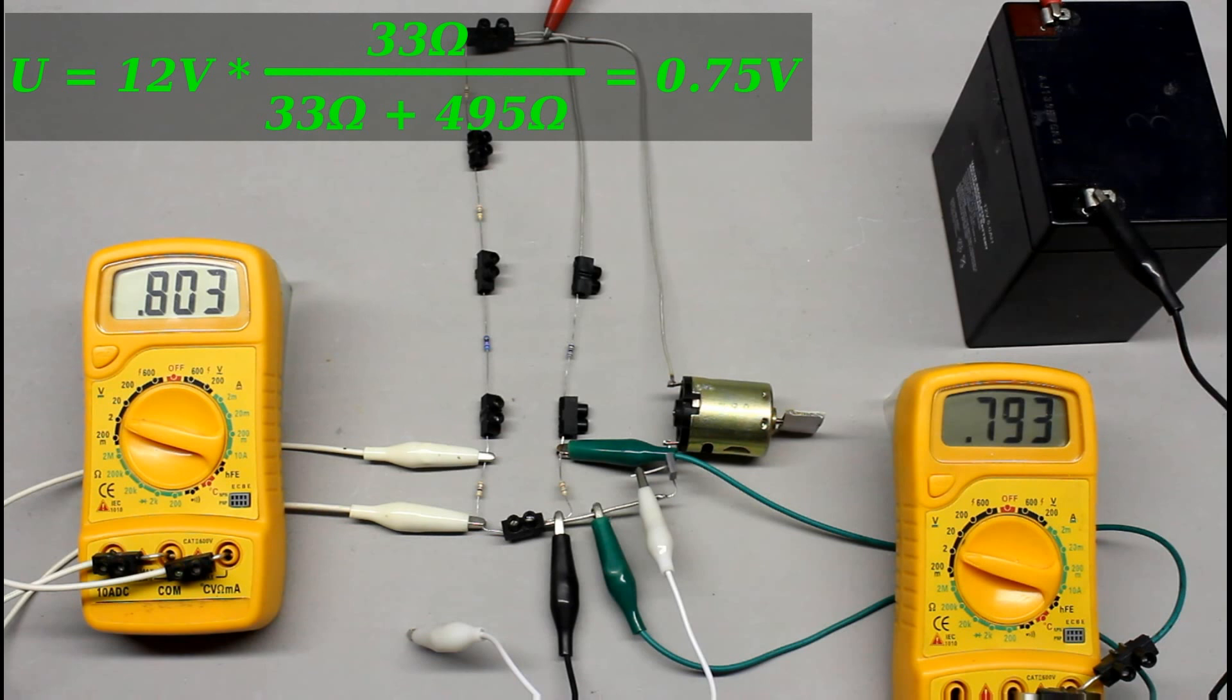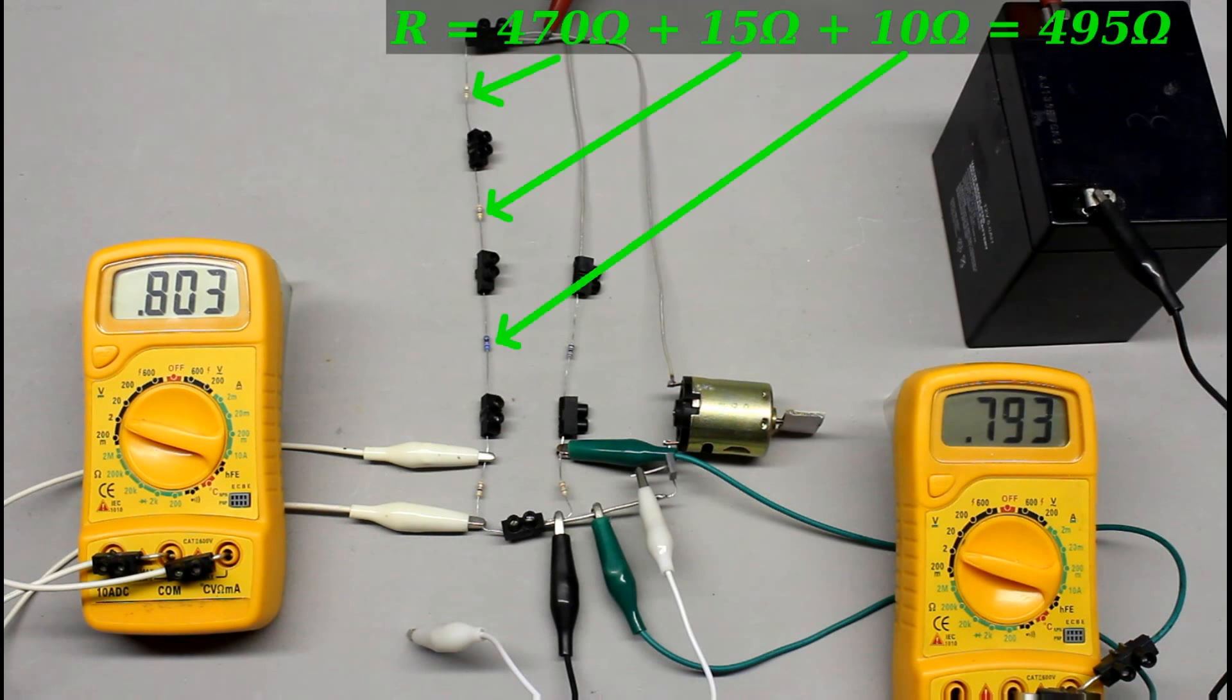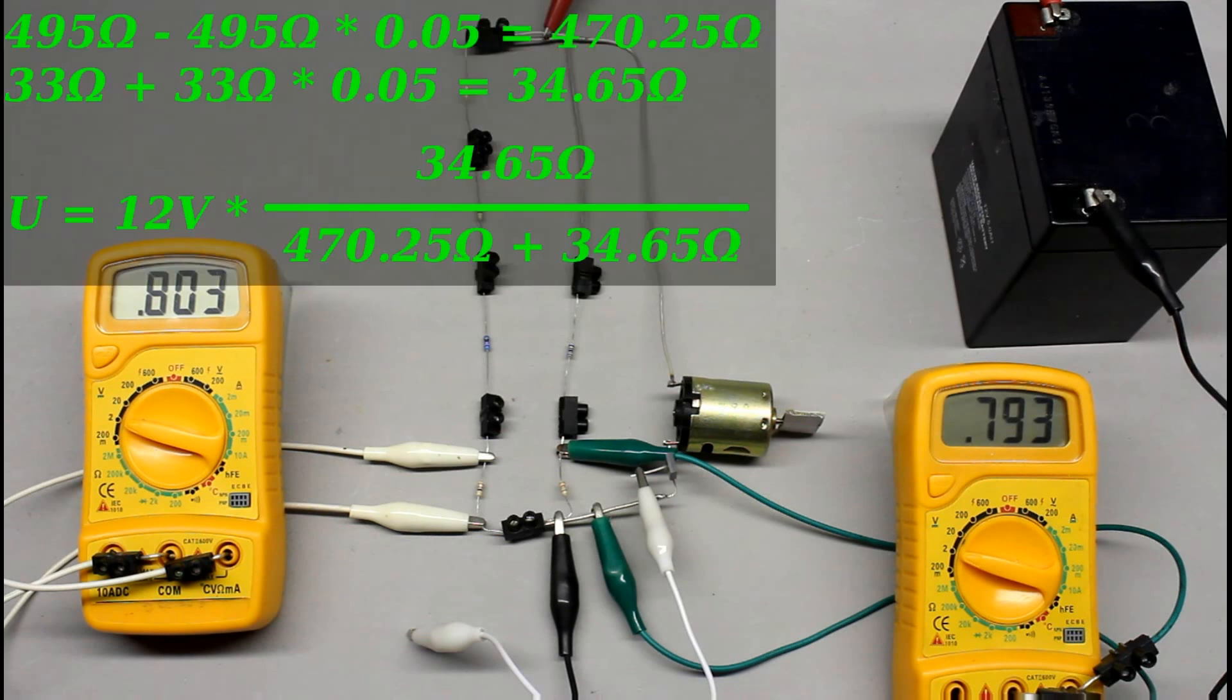But you won't be able to purchase a 495 ohm resistor. The solution of the problem is to use one 470, one 15 and one 10 ohm resistor instead. The measured voltage drop at R4 is 0.8V. The tolerance of the used resistors is plus minus 5% by what the resulting voltage at R4 is between 0.68 and 0.82V.